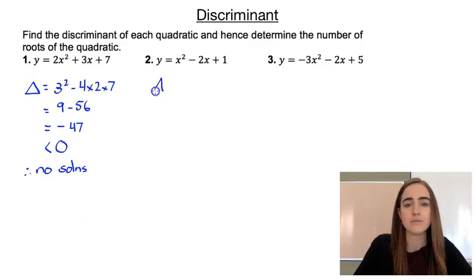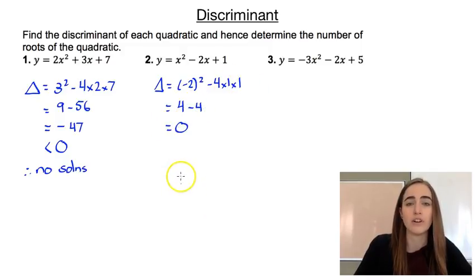For our second example, our discriminant is that -2 squared minus 4 times, where the coefficient of x² is just 1 times 1. So -2 squared gives us 4, and this bit gives us 4, and that comes out just to be 0. So that means we have one solution or one x-intercept.